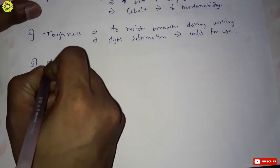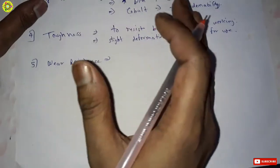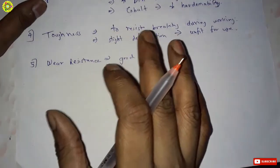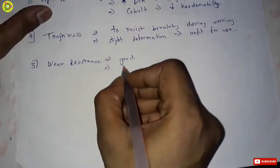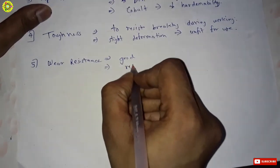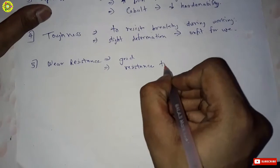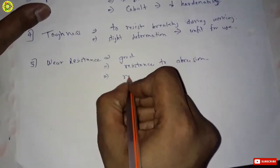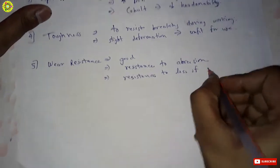The fifth property is wear resistance. Tool steel should have good wear resistance because it should resist abrasion and loss of dimensional tolerance. Wear resistance offers resistance to abrasion and resistance to loss of dimensional tolerance.